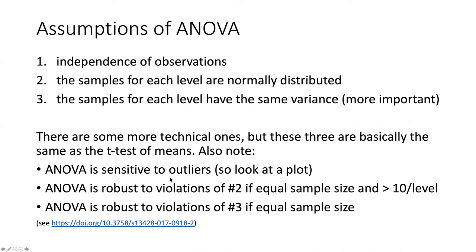Other things to note is that ANOVA is relatively sensitive to outliers, so it's always a good thing to plot your data and look for outliers that could be causing problems. ANOVA is relatively robust to variations of the normal distribution if the different groups or levels in your experiment have approximately equal sample size and if there are more than 10 measurements per level.